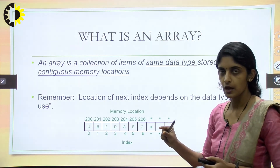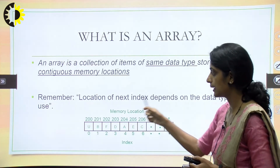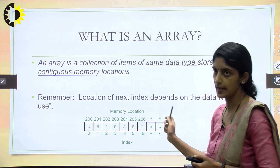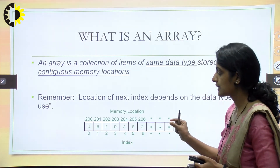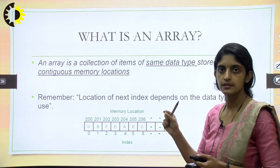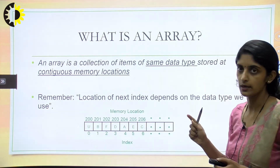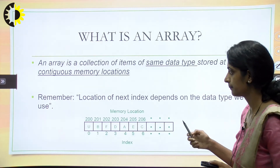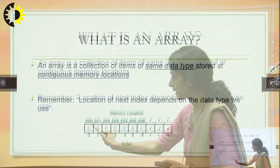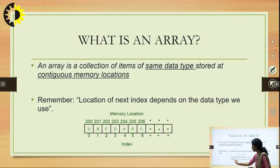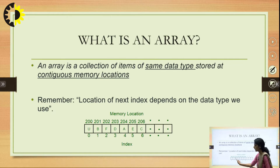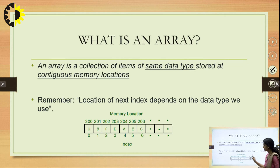We have an array containing character data elements: u, b, f, d, etc. Since the size of a character data type element is 1 byte in 16-bit compilers, character u takes 1 byte, so its address is 200. Since it takes 1 byte of memory, the next address will be 201. b also takes 1 byte, so the next address will be 202, and so on.